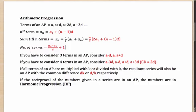Sometimes you are asked to find the number of terms, when the first term, last term, and common difference are all given. For example, 3, 6, 9, 12 and so on. The formula is: (last term − first term) ÷ common difference + 1. That is how you find the number of terms in an AP.